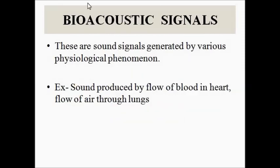The second type of signal is the bioacoustic signals. Acoustic essentially means sound. These signals are the sound signals which are produced because of various physiological phenomena — the movements or activities happening in the human body. For example, the sound of blood flowing through the various blood vessels, or the sound produced due to the movement of air through the lungs — these are all bioacoustic signals.